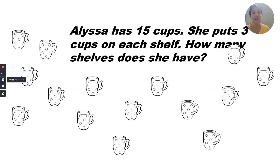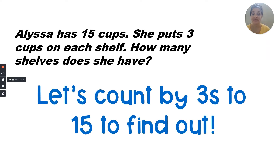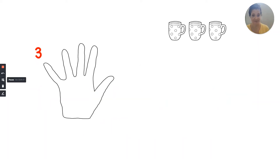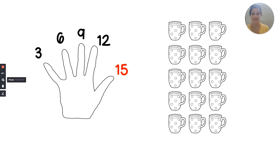Here's another one. Alyssa has 15 cups. She puts three cups on each shelf. How many shelves does she have? We're going to organize all 15 cups onto the shelves. Let's count by threes to get to 15 to find out how many shelves she needs: three, six, nine, twelve, fifteen. So if I put those cups on a shelf — like putting them in rows — we have one, two, three, four, five shelves, or five rows in an array.